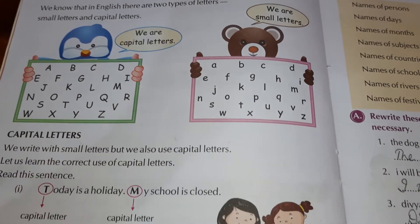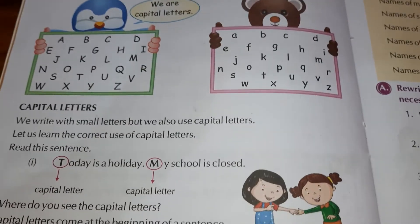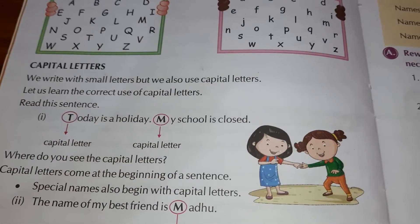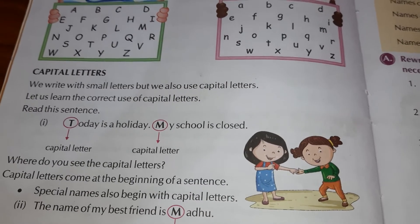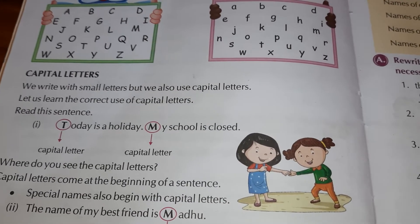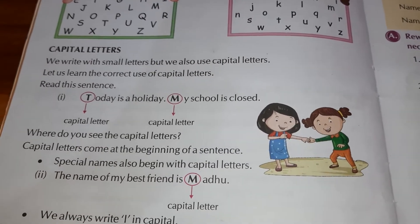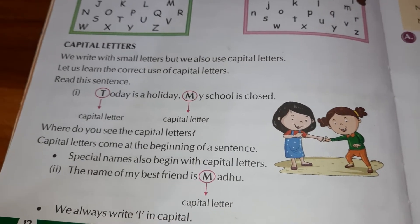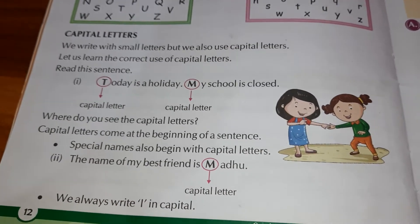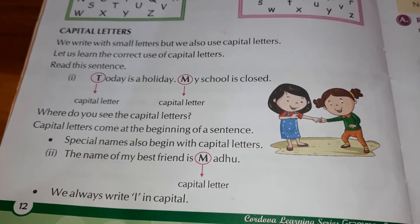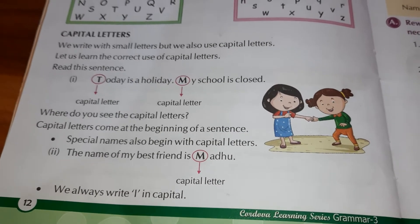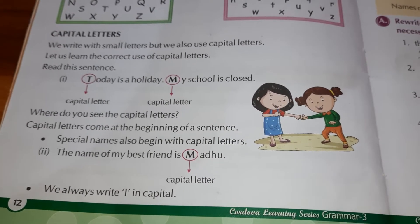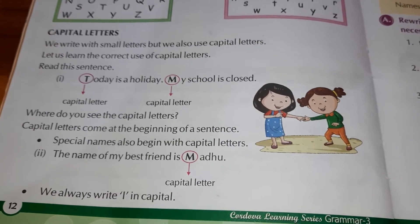We write with small letters but we also use capital letters. For example, in the beginning of a sentence we use capital letters. It means capital letters come at the beginning of a sentence — whenever we start any sentence, we use capital letters.